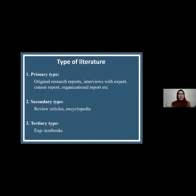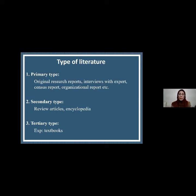During literature review, we should know what type of literature to evaluate for our research. Literature may be primary — materials originated by original research reports, interviews with experts, and research reports. There may also be secondary types of literature, like review articles and encyclopedias. There may also be textbooks as examples.